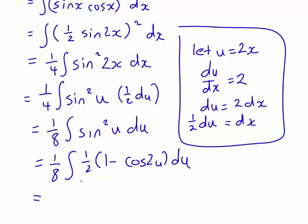We're starting to see why I like to take care of these fractions as they appear, otherwise it can get quite messy. And 1 eighth times 1 half is 1 sixteenth. So let's just take that outside the integral sign as well. So we now have 1 sixteenth times the integral of 1 minus cos 2u du.